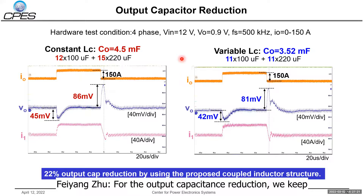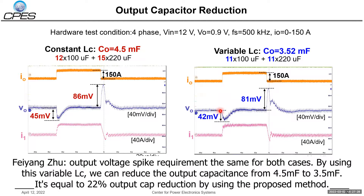For output capacitance reduction, keeping the transient spec requirement the same for both cases, using the variable LC allows reduction of the output capacitance from 4.5 mF to 3.5 mF, equal to a 22% output capacitance reduction using the proposed method.